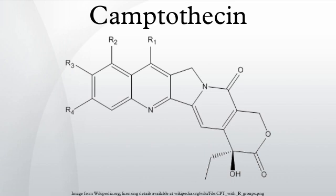CPT has a planar pentacyclic ring structure that includes a pyrrolo[3,4-b]quinoline moiety, a conjugated pyridone moiety, and one chiral center at position 20 within the alpha-hydroxy lactone ring with S-configuration. Its planar structure is thought to be one of the most important factors in topoisomerase inhibition.